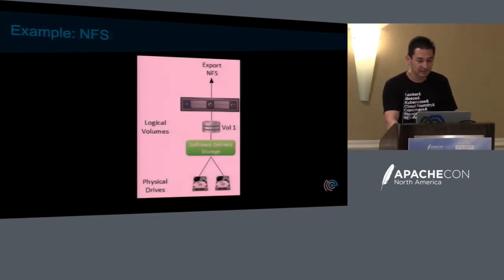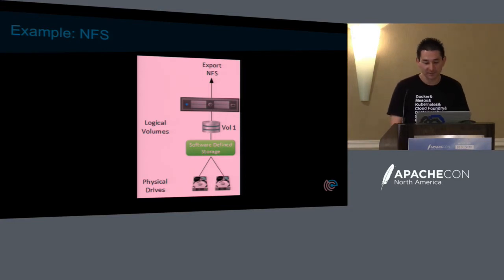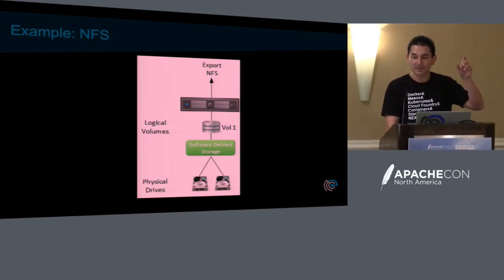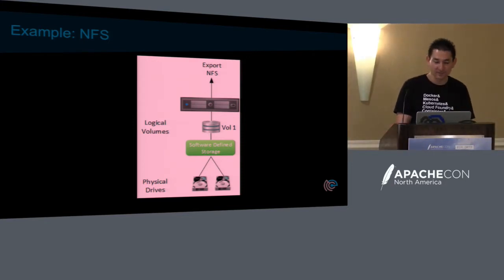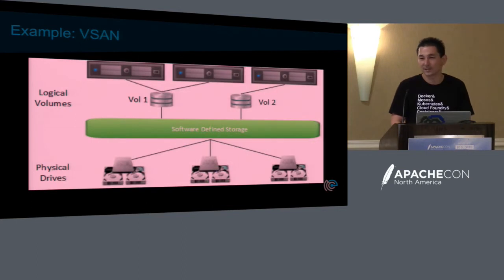To give a visual representation of NFS: you have two physical drives, maybe in an LVM group, then a software-defined storage layer which is just your NFS server, and that gets exposed to the end user who consumes it using an NFS client. That's a very simple definition of software-defined storage. We're going to skip over vSAN to save time for the demo.